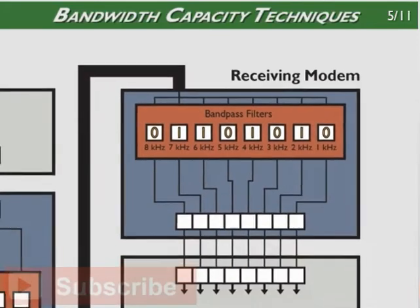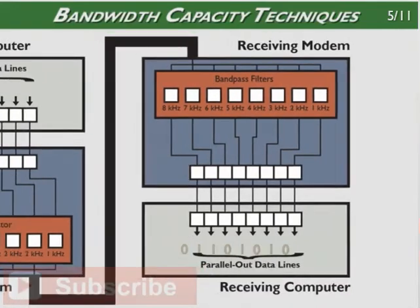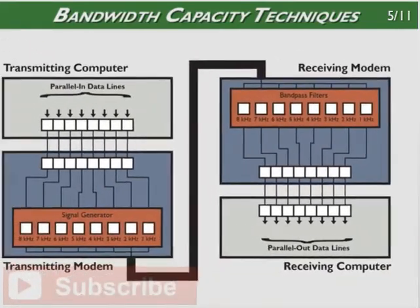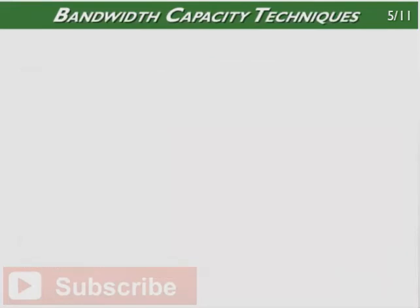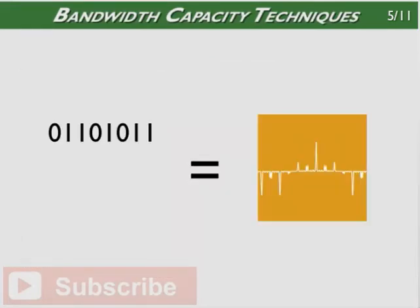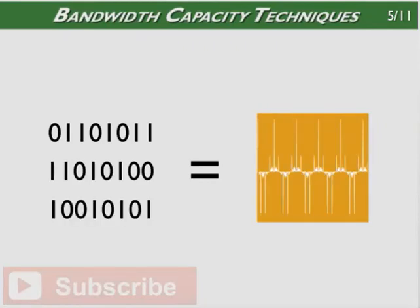Once the receiving modem processes all of the data, it's transferred in parallel to the receiving computer. Because modems can use multiple carrier frequencies at the same time, they can simultaneously transmit groups of bytes. This allows more data to be transmitted at the same time and speeds up data transmission rates.